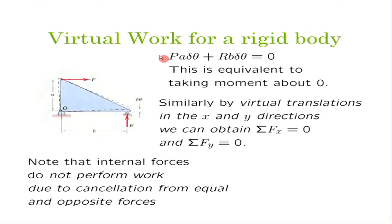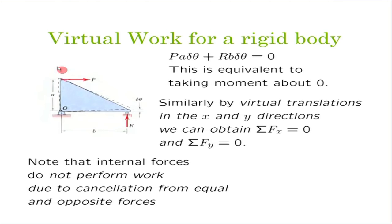Let us take a simple example: virtual work for a rigid body. We have a rigid triangle supported by a hinged support at O and a roller support at R. The body is subjected to a horizontal force P at the top. We want to find the vertical reaction R at the roller, and the horizontal and vertical reactions at O. These are the three questions to answer.